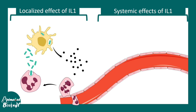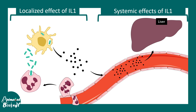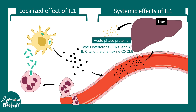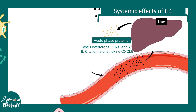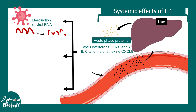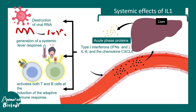Sometimes interleukin 1 is also secreted into the bloodstream and can reach the liver, where it induces the liver to produce acute phase proteins such as TNF, interferon 1, interleukin 6, and chemokine CXCL8. All of that together increases inflammation in the body. This acute phase response can lead to destruction of viral RNA, generation of fever, and activation of both T and B cells.